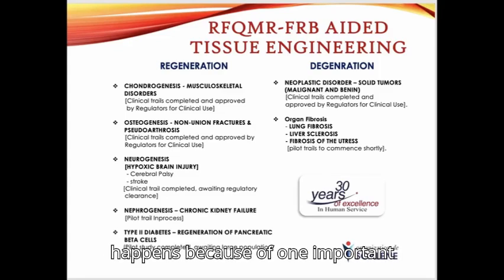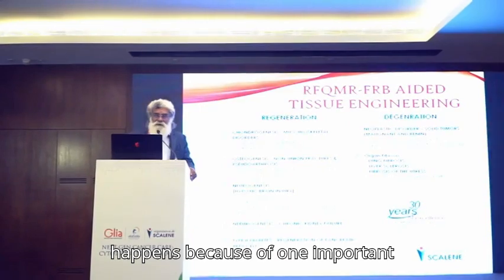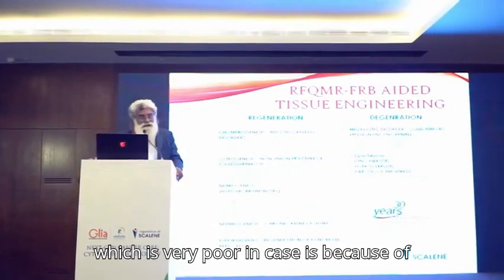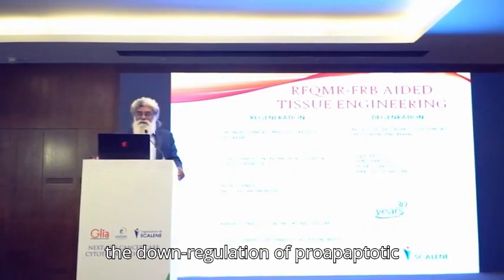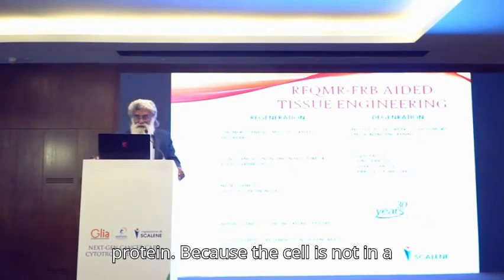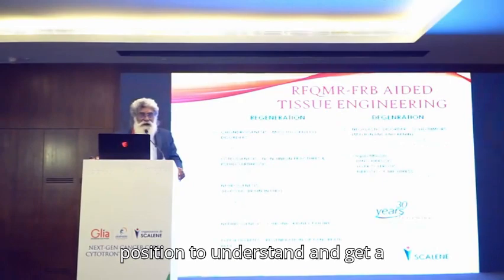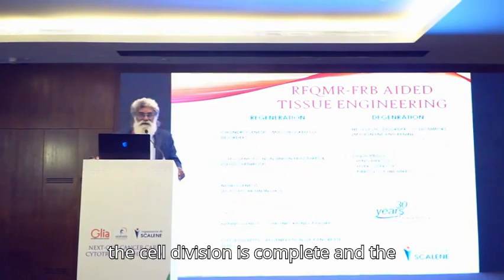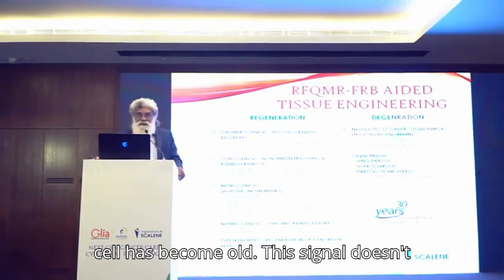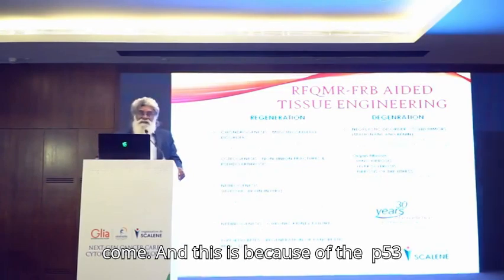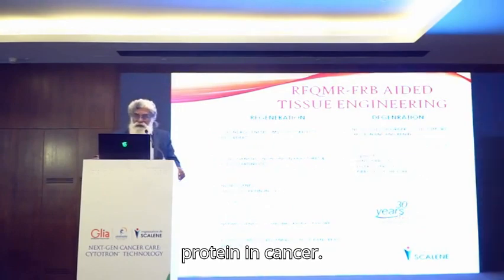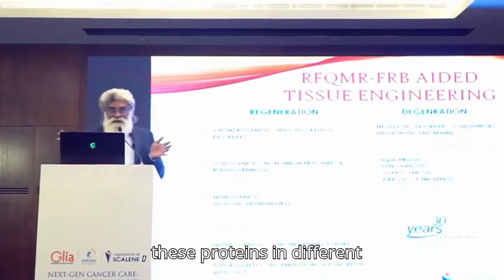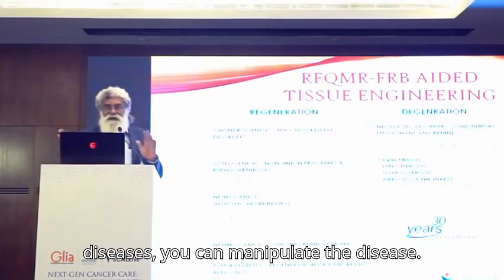Cancer happens because of one important reason: the down-regulation of pro-apoptotic protein. Because the cell is not in the position to understand and get a signal from the nucleus of the cell that cell division is complete and the cell has become old. This signal doesn't come — and this is because of the P53 protein and cancer. So if you can manipulate these proteins in different diseases, you can manipulate the disease.